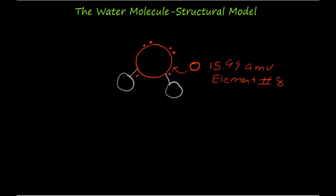Oxygen shares two of those six electrons with the hydrogen atoms via covalent bonding, leaving four unbonded electrons remaining. These four electrons are shared with hydrogen atoms of other water molecules through the process of hydrogen bonding rather than covalent bonding.